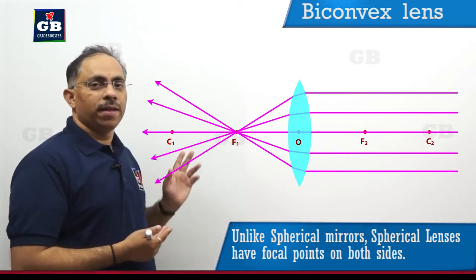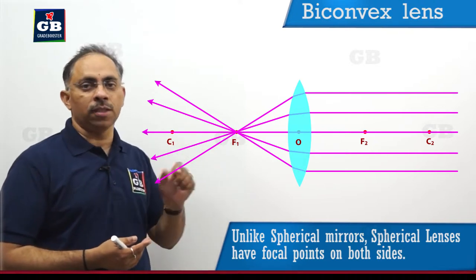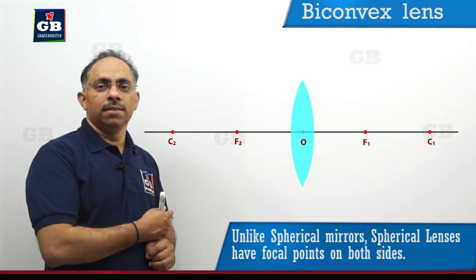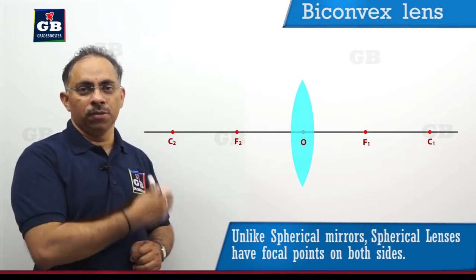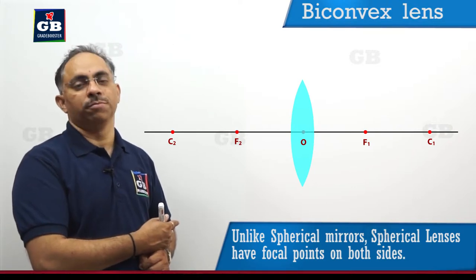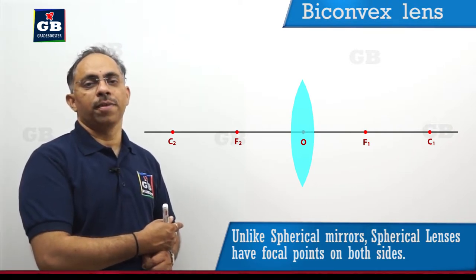If I assume that the right side of the lens, the principal focus is F1, then I can denote the similar point which is on to the left side to be as F2.